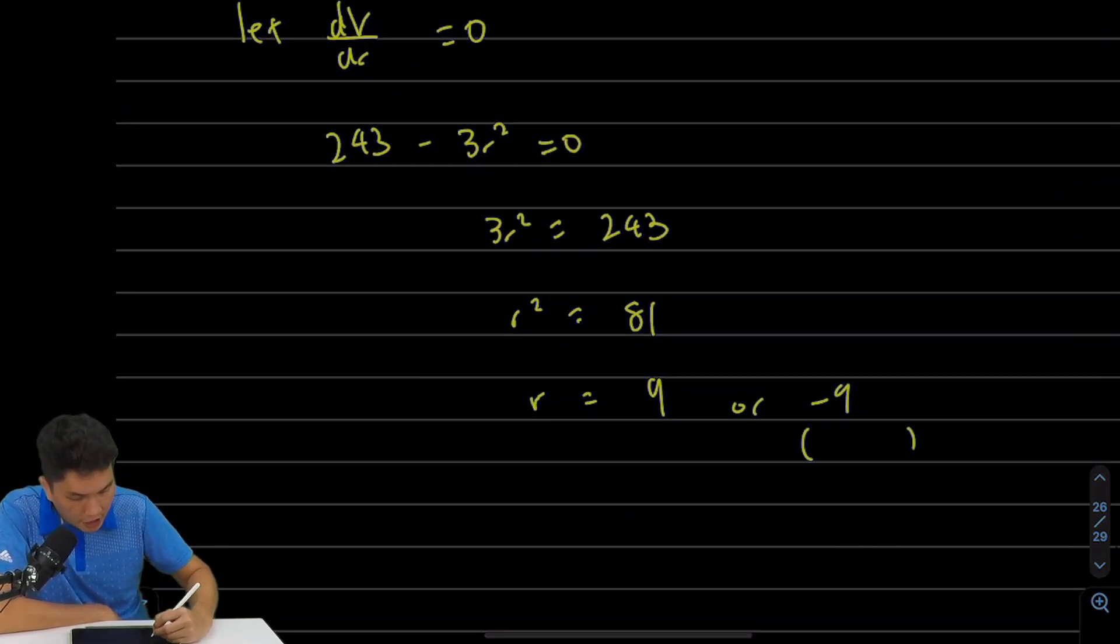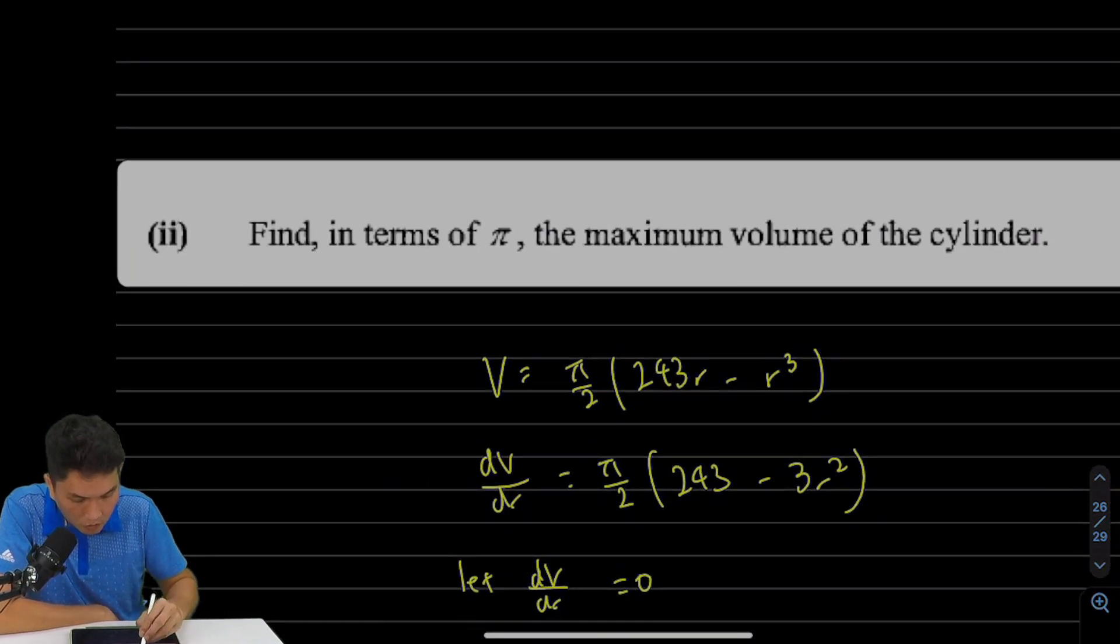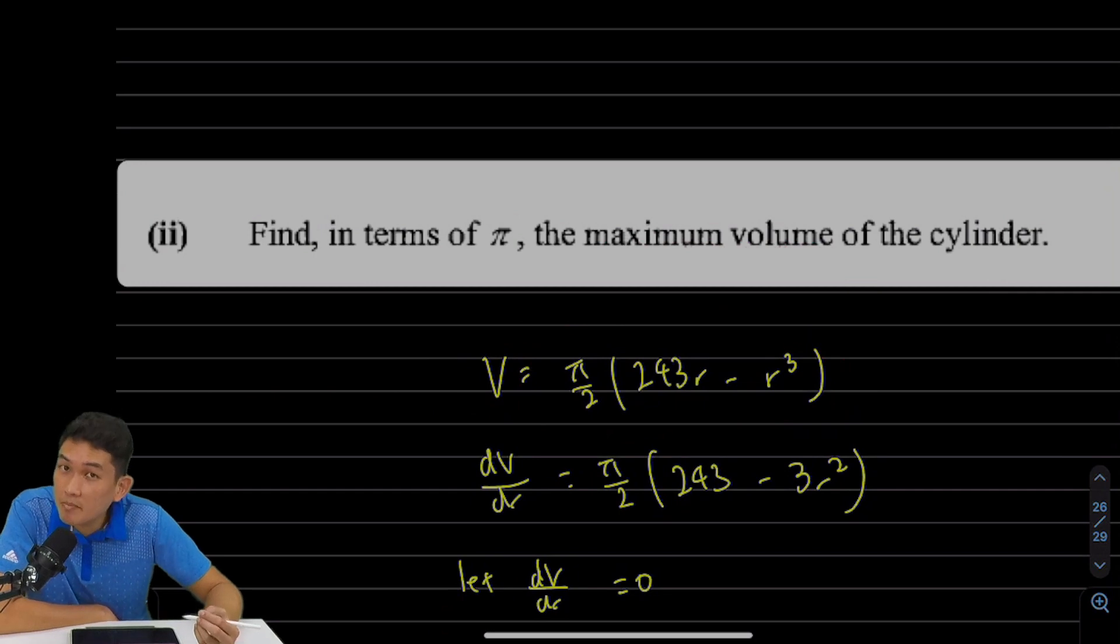Of course, I'm going to reject negative 9 because r is the radius. A radius should be a positive number. So this is 9 centimeters. So we have not answered the question yet. Part 2 wants us to find the maximum volume of the cylinder. So I guess what most students will do is substitute 9 right here. But you have to be careful because what you're given might be the minimum volume. Letting dV/dr equals to 0 does not give you maximum straight away. It just gives you either a maximum or minimum. So we also have to prove that there's a maximum. So let's do that first.